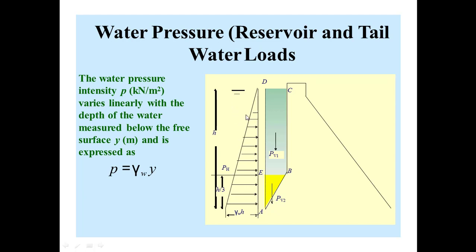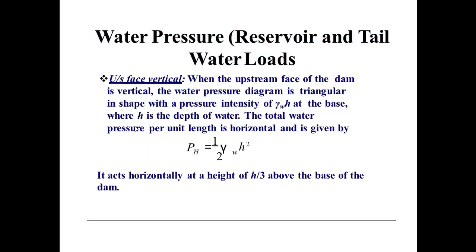If the unit weight of water is denoted by γw, then multiplying it with the total depth of water gives the total pressure intensity. The unit of pressure intensity is kN per square meter. For the upstream face vertical case, when the upstream face of the dam is vertical, the water pressure diagram is triangular in shape with a pressure intensity of γw × h at the base, where h is the depth of water.